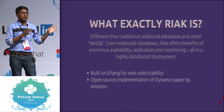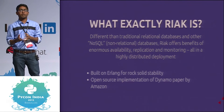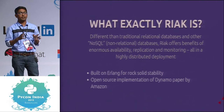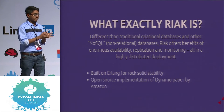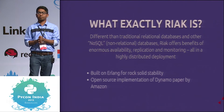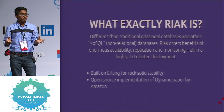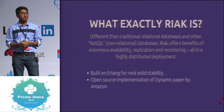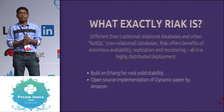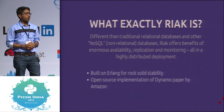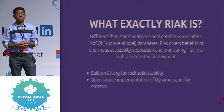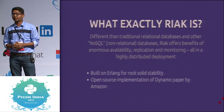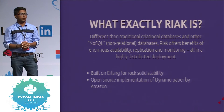In Erlang there are actors and concurrent programming in which everything is fault-recoverable. One process, even if it dies, won't crash the system — it is independent. All processes communicate with each other using messages; there are no shared resources. So obviously there will be no crash even if one process dies. Riak DB is built on Erlang, so it will be robust. MongoDB is on C++ and Cassandra is on Java.